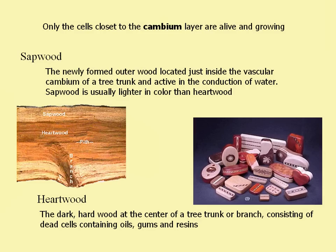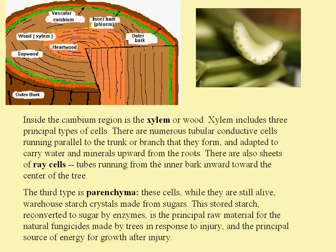Getting into more depth with the cross section of the tree, that xylem includes three types of cells. There are tubular conductive cells, similar to what you see in a celery stalk. You also have sheets of ray cells, which are tubes running from the inner bark towards the center of the tree. The third type of cell is called parenchyma — those are the starch-holding cells within a tree. The parenchyma stores starches which are reconverted to sugar to be used by the tree for repair and for energy.